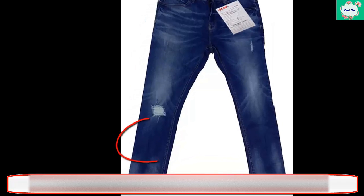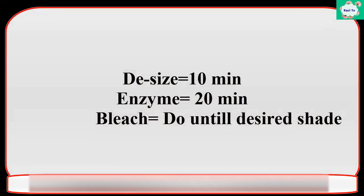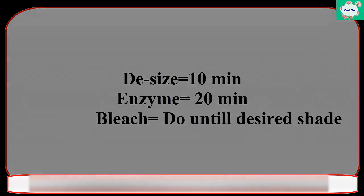To get the shade, we will do base size for 10 minutes, enzyme for 12 minutes, and bleach until the desired shade is achieved.